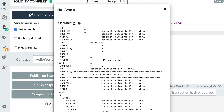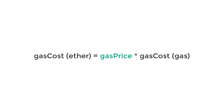The Ethereum Virtual Machine can tell us what the total gas cost of our transaction is. But we want to know how much Ether we're going to pay for this transaction, so let's have a look at this equation. On the right, you have the gas cost in gas — this is the sum of the gas costs of all the opcodes, and it is calculated by the Ethereum Virtual Machine.